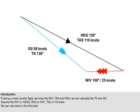We can now draw in the third side. So, if we were actually drawing the triangle of velocities to scale, we would see that the orientation of the third side was 138 degrees, giving us our track over the ground, and that its length indicated a ground speed along that track of 89 knots.